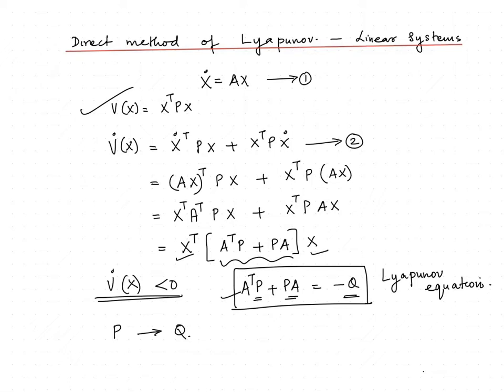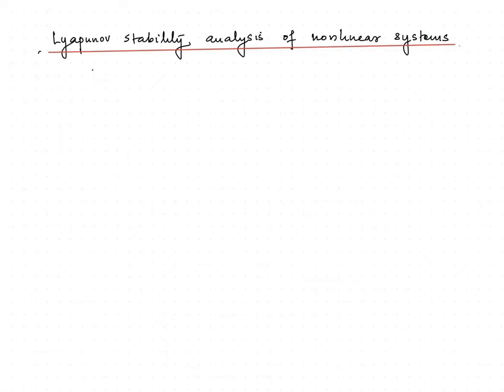Studies have shown that initial choice of Q and thereby finding P will result in a unique solution. This results in proper prediction of the nature of stability of the system. A simple choice of Q matrix is the identity matrix.